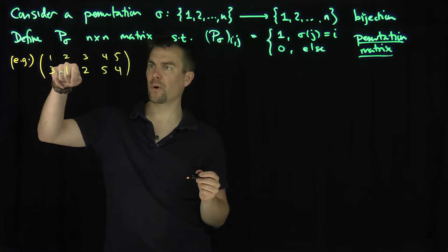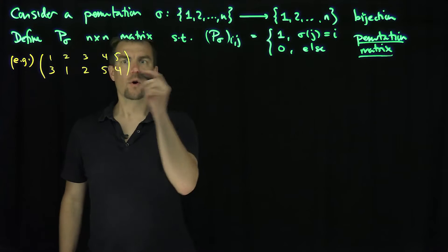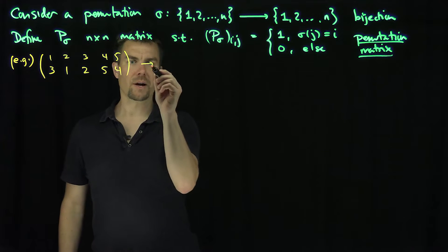So in other words, 1 gets mapped to 3, 2 gets mapped to 1, 3 gets mapped to 2, 4 goes to 5, 5 goes to 4. What would this look like over here? This is going to correspond to, this is my sigma.